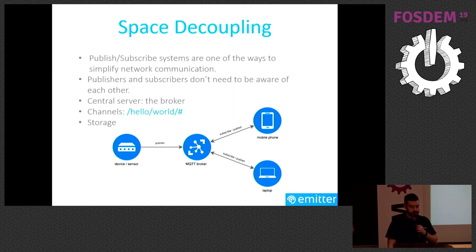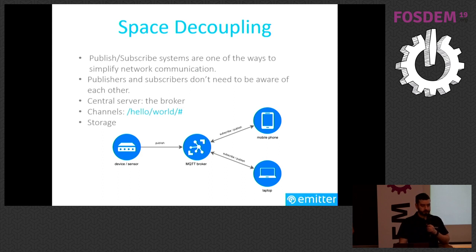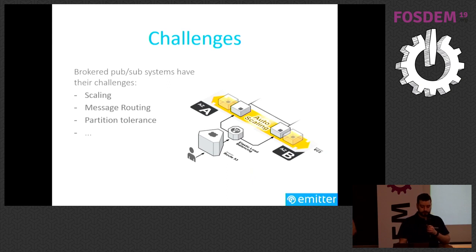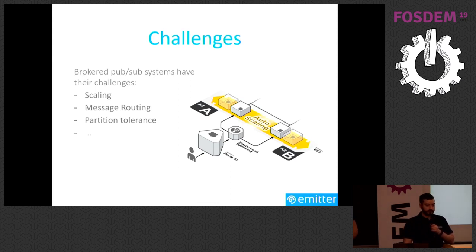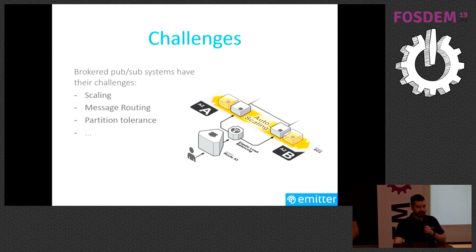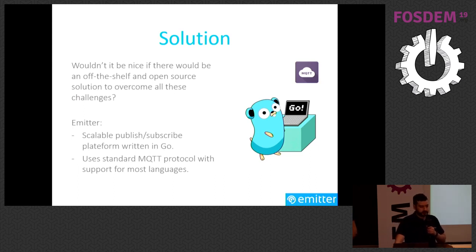It's a nicer solution, but still not perfect. What happens if you have a very successful application with millions of messages exchanged every second? One server may not be enough — you need a cluster of brokers working together. As soon as you have several servers, you need message routing to ensure messages arrive at their destination. You may not want an interruption of service if one or multiple servers break down. You need to scale up and down efficiently to not waste resources. That can become very complex very fast. Wouldn't it be nice if there was an off-the-shelf solution? That's why we created Emitter — a publish-subscribe platform written in Go that uses the MQTT protocol.